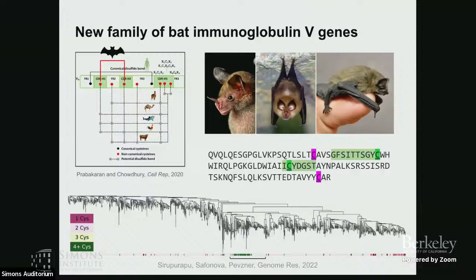Antigen-binding loops are usually thought of as very flexible — they can rotate and change position. But if they have cysteines and those cysteines are fixed together by disulfide bonds, the composition of antibodies is slightly different and lacks that freedom. We are interested in what kind of antibodies these are. The hypothesis is that they could be highly stable — bats raise and drop their temperature in a very wide range, and maybe these antibodies work in such circumstances because of their more stable and firm structure. We also found this feature in squirrels, which share this temperature-variation trait.